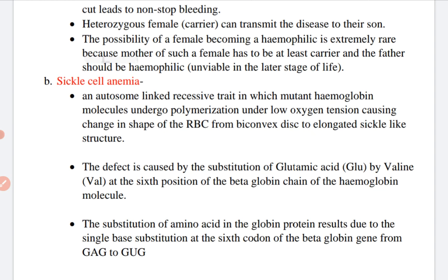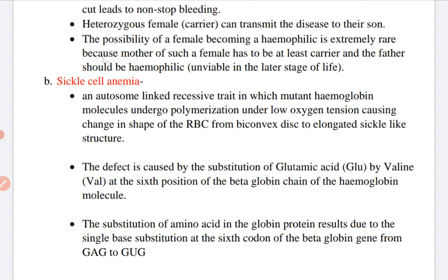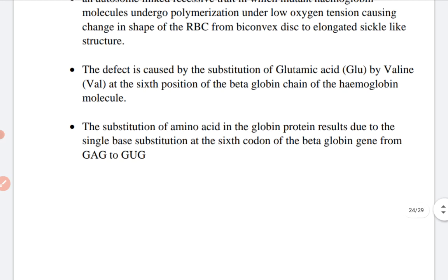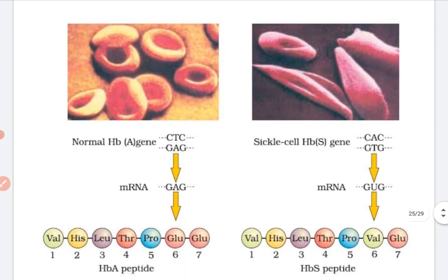Sickle cell anemia is an autosome-linked recessive trait in which mutant hemoglobin molecules undergo polymerization under low oxygen tension, causing the change in shape of RBCs from biconcave to elongated sickle-shaped structures. This defect is caused by substitution of glutamic acid by valine at the 6th position of the beta-globin chain of the hemoglobin molecule. This results from a single base substitution at the 6th codon of the beta-globin gene from GAG to GUG. This diagram shows sickle cell anemia.